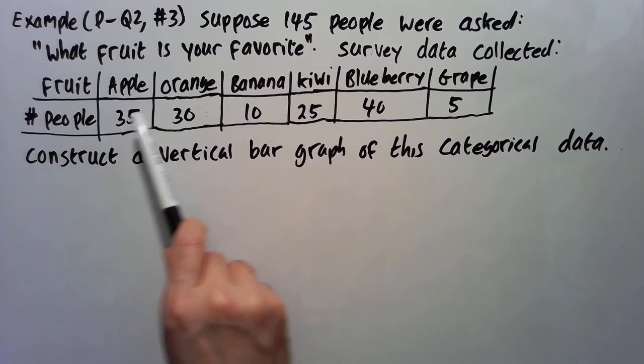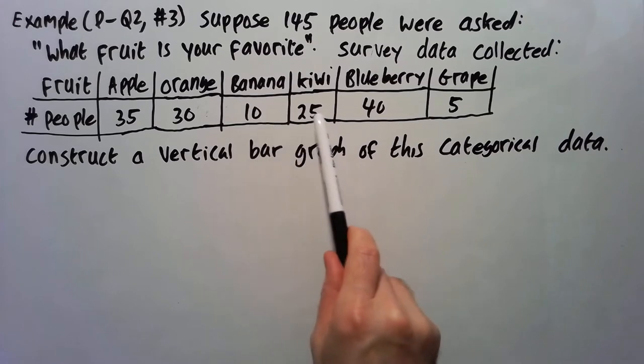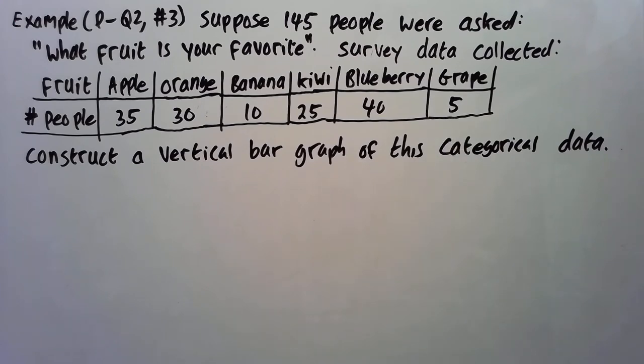So for apple, 35 people chose it. Orange, 30 people chose it. Banana, 10 people chose it. Kiwi, 25 chose it. Blueberry, 40 chose it. Grape, 5 people chose it. So we have to construct a vertical bar graph of this categorical data.